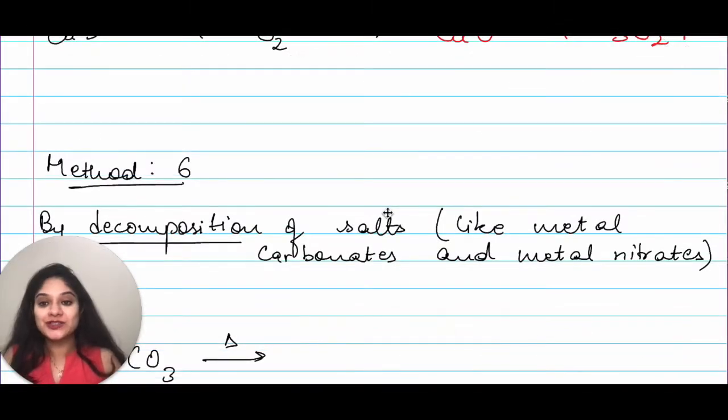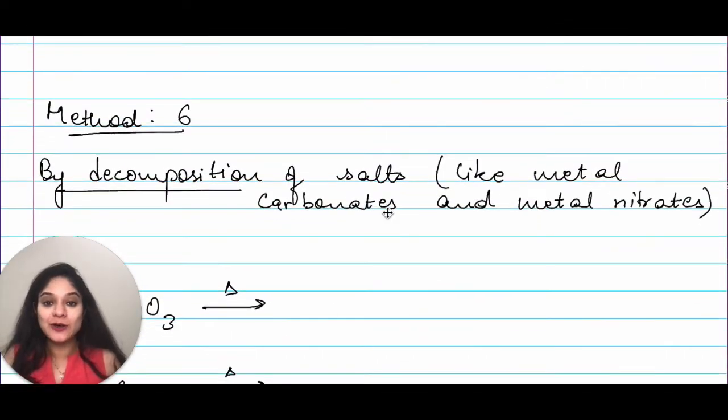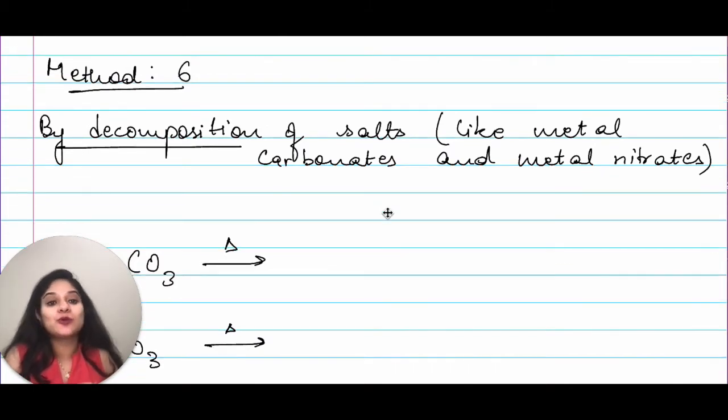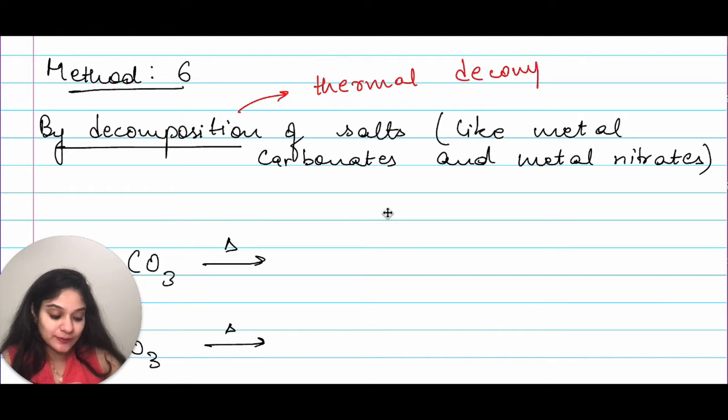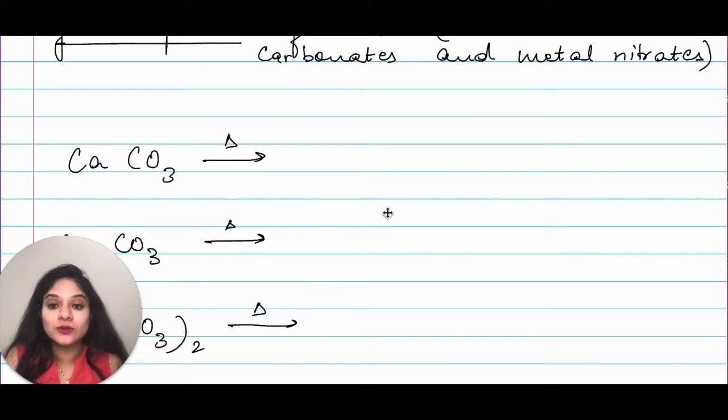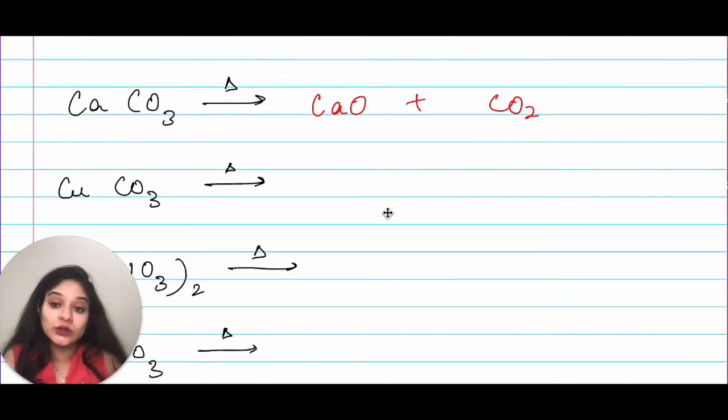Moving on to the sixth method that is by decomposition of salts like metal carbonates and metal nitrates. This decomposition is in the presence of heat. So, we can also call it thermal decomposition. I have calcium carbonate CaCO3 so that will give me CaO plus CO2. CuCO3 that is copper carbonate will give you copper oxide CuO plus carbon dioxide.